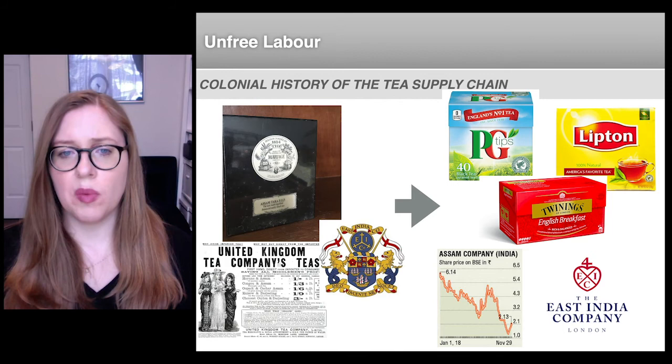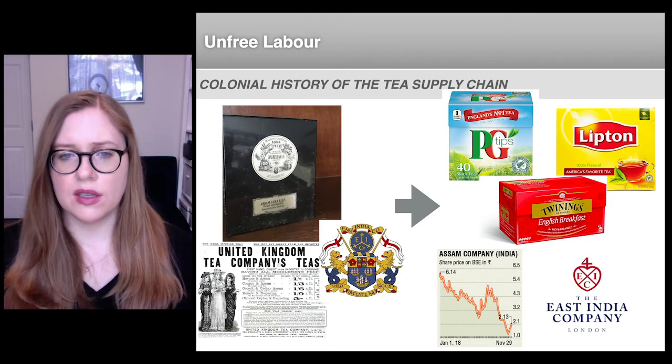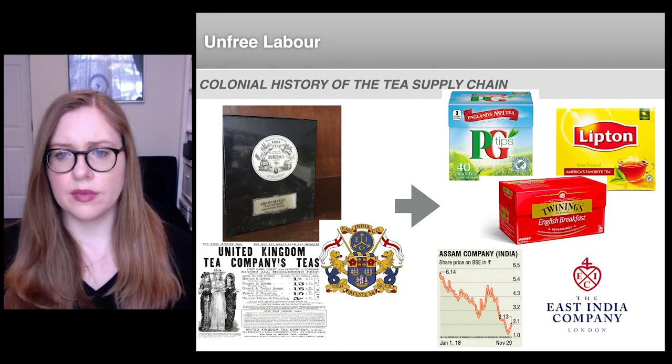As well, planters obtained the right to immobilize workers within the confines of the plantation. They had, according to the law, penal rights over their workforce. And as a direct result of this unfree labor system, the Assam tea industry grew rapidly, outpacing China for the first time in 1888 to become the leading exporter of tea.